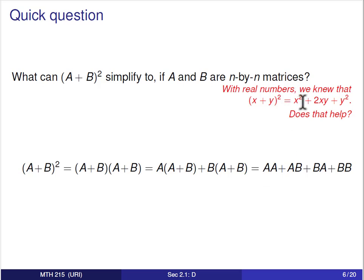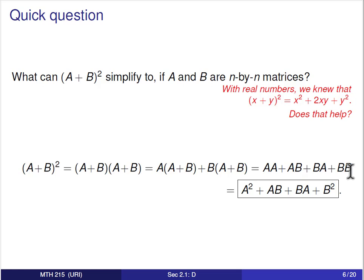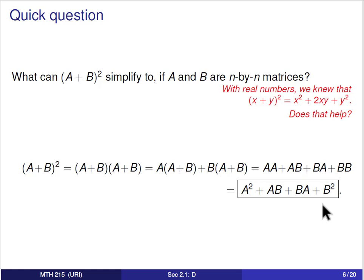Starting with A·A, we can write that as A². The last term, B·B, can be written as B². However, the inner terms AB and BA may not be the same — that was one of our warnings for matrix multiplication. If you multiply two matrices in a different order, they may not be equal. So we cannot combine them to form 2AB as with real numbers. The most we can simplify is A² + AB + BA + B².